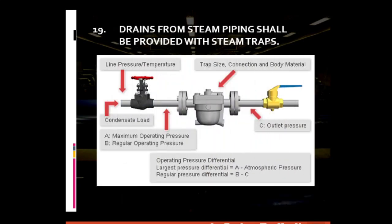For general piping requirement number nineteen: drains from steam piping shall be provided with steam traps. Used steam still possesses a certain amount of heat that could still be reused. Instead of being wasted, steam traps are used along the drains of steam piping to extract steam from the condensate — the liquid — for possible reuse, rather than just being discarded.